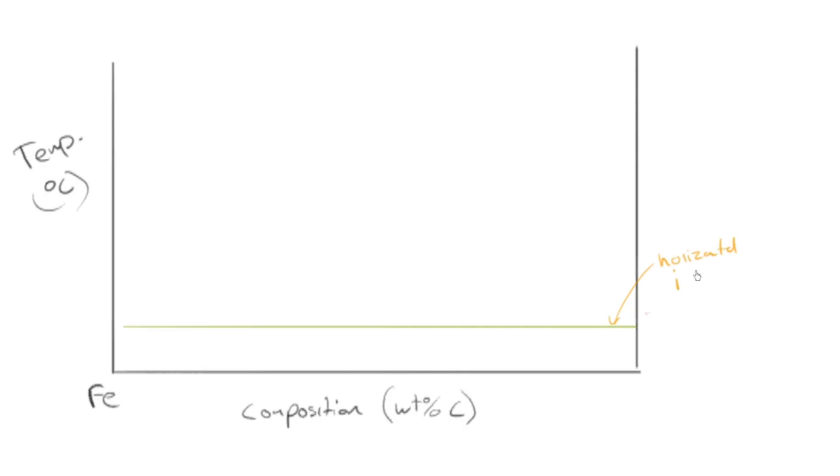Horizontal line. Fancy name for that is horizontal line, right? This means it's got a constant temperature, so you could call it an isotherm if you want it to be fancy. And that one occurs at 727. Of course, we've already seen an isotherm in the water-sugar system. There's another isotherm that occurs at 1147.